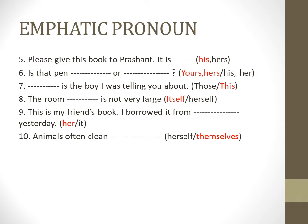Sixth question: is that pen dash or dash? Is that pen yours or hers? Why are we saying yours or hers? Because it's asking — is that yours or hers? It's throwing a question. The seventh question: dash is a boy who is telling you about. This is a boy who is telling about you. We cannot say 'those is a boy' — here we are saying this is a person, so we say 'this.'